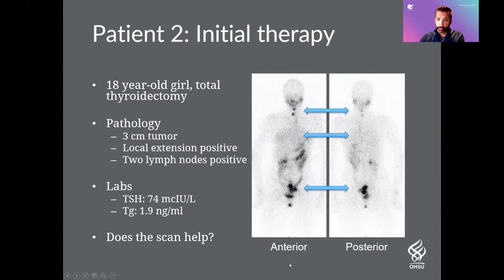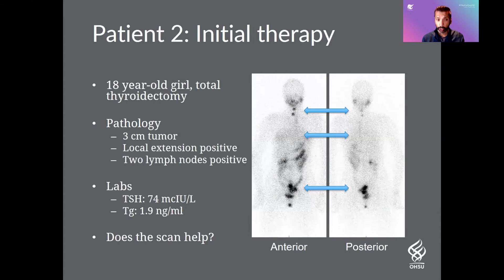Going back to this case — does the scan ultimately help? More or less it's in line with the clinical history. We expected some residual thyroid tissue left over after surgery, and it doesn't look like the findings are lymph nodes. Being a young patient in a very good prognostic group, I think the answer is: it's debatable. Some would argue it's good to ablate the residual tissue to make the thyroglobulin undetectable and easier to follow. Others would say it's not going to change outcome, so why give additional radiation when it's not needed?